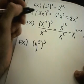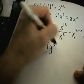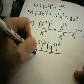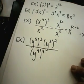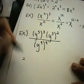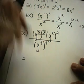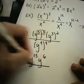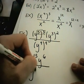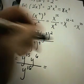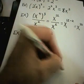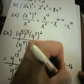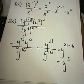Suppose I have y to the fifth raised to the third power, times y to the third power squared, all divided by y to the fourth raised to the fourth power. Simplify the numerator: five times three gives y to the fifteenth, and y to the third squared gives y to the sixth. Multiply those together to get y to the twenty-first. In the denominator, four times four gives y to the sixteenth. Subtracting exponents: twenty-one minus sixteen gives y to the fifth as the final answer.